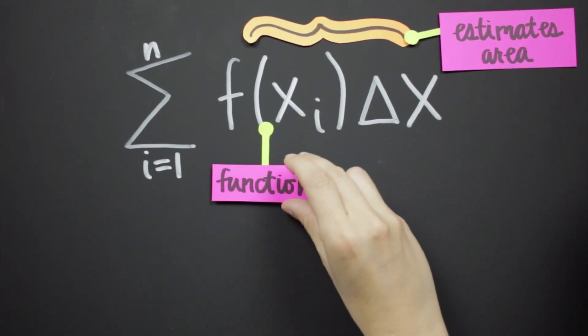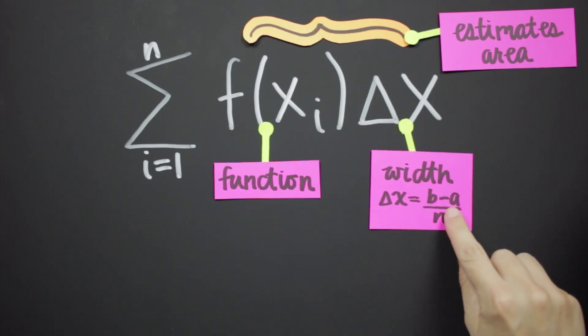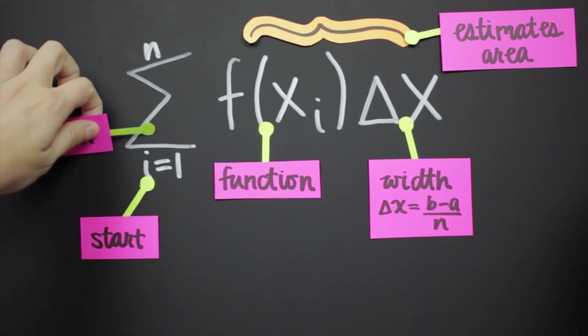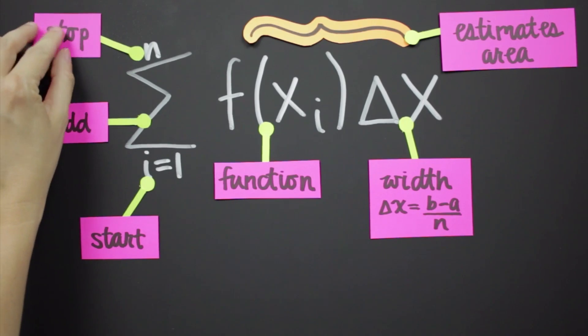It tells you that you're trying to find the area under this function using rectangles that are each delta x wide. You're starting with the first rectangle, adding up the area of all the rectangles, and then stopping when you get to the nth rectangle.